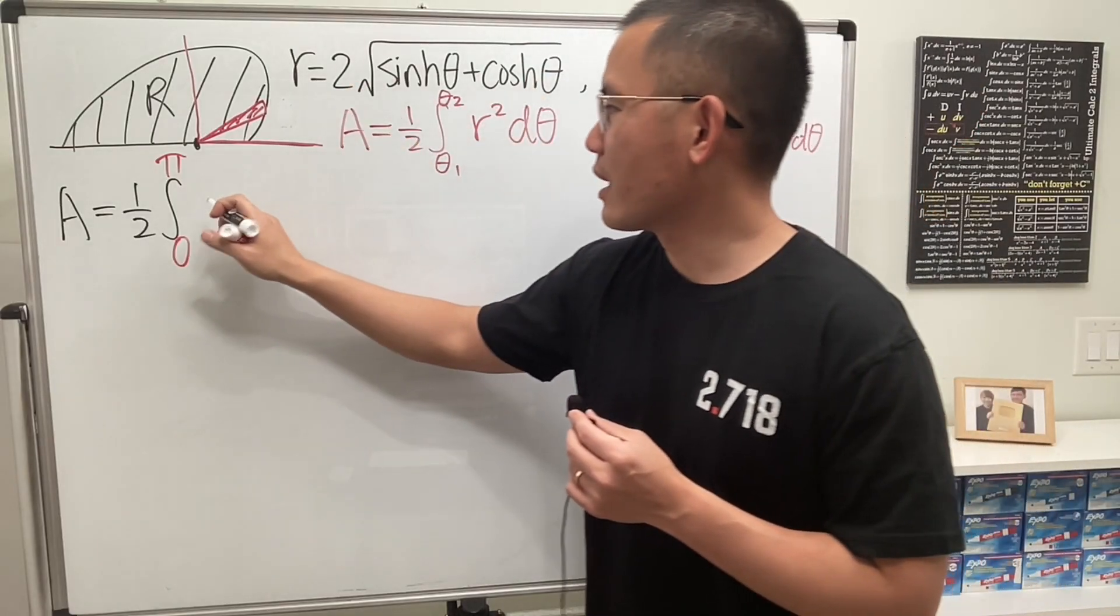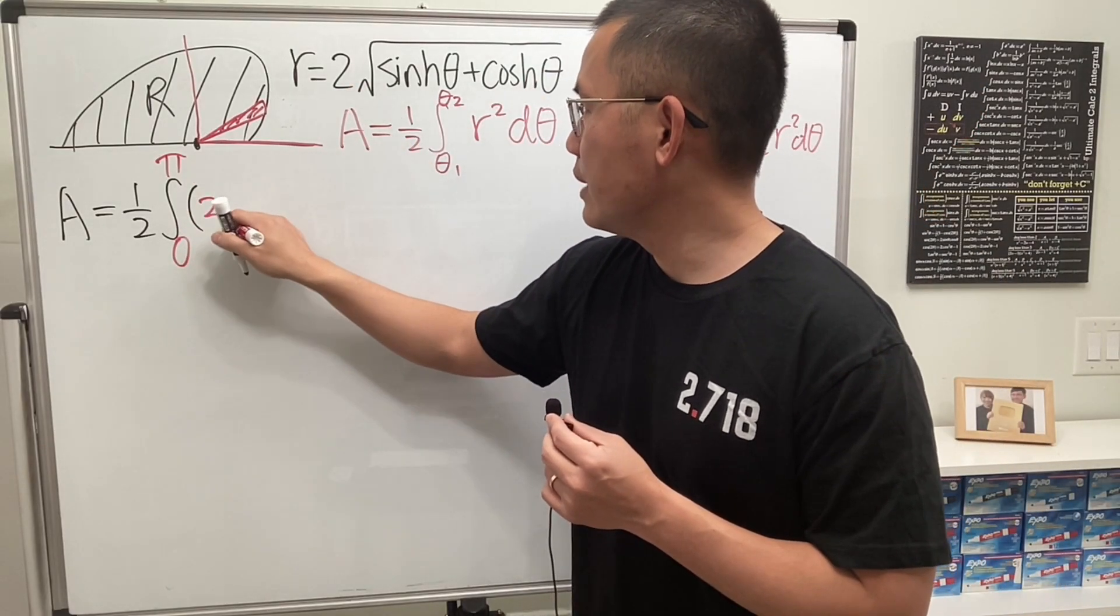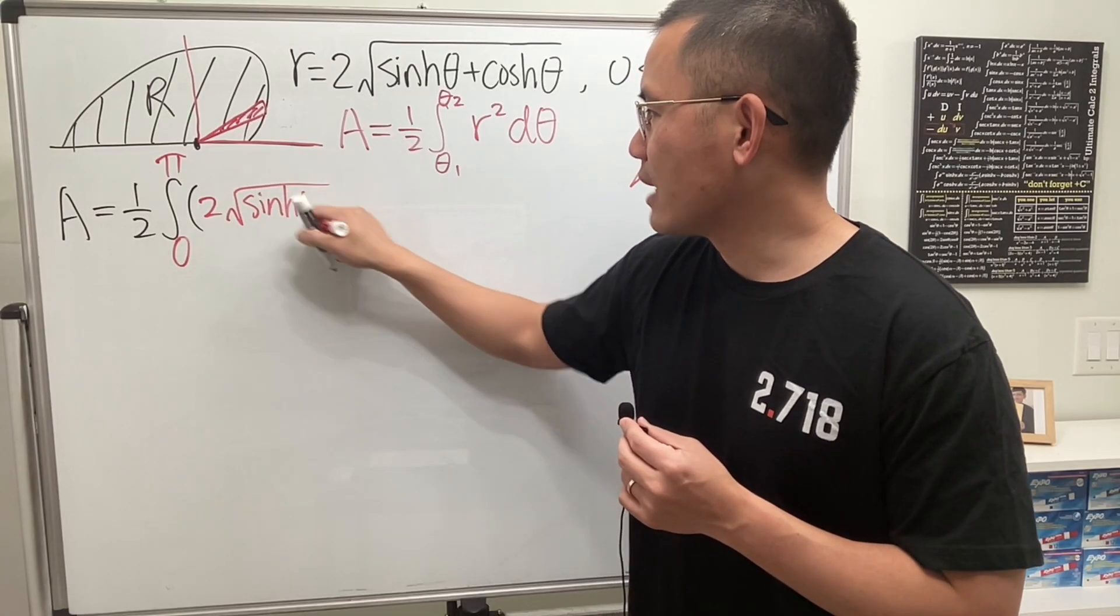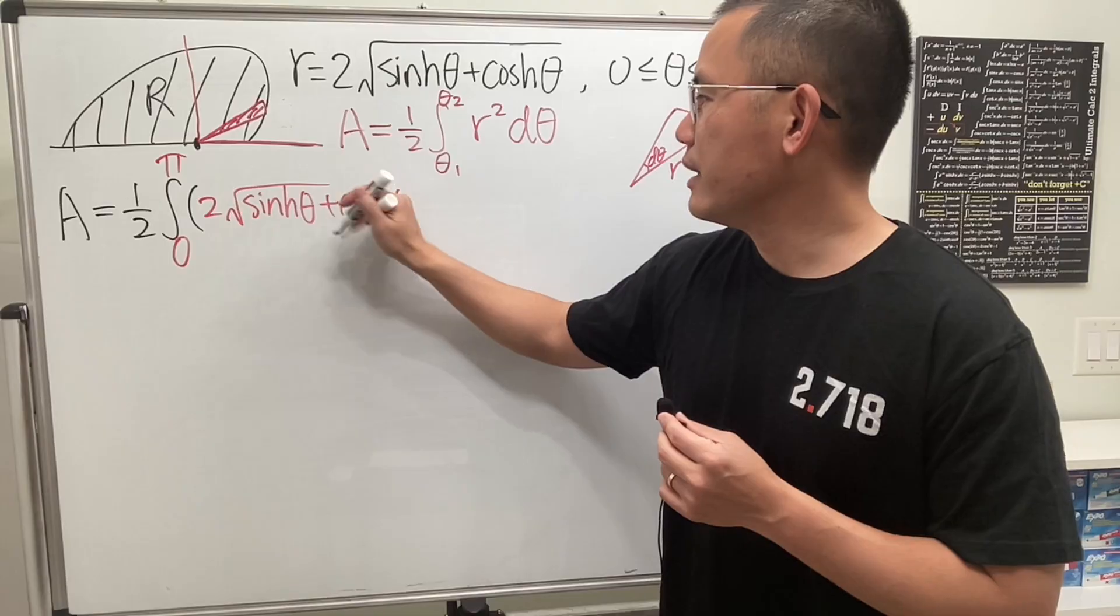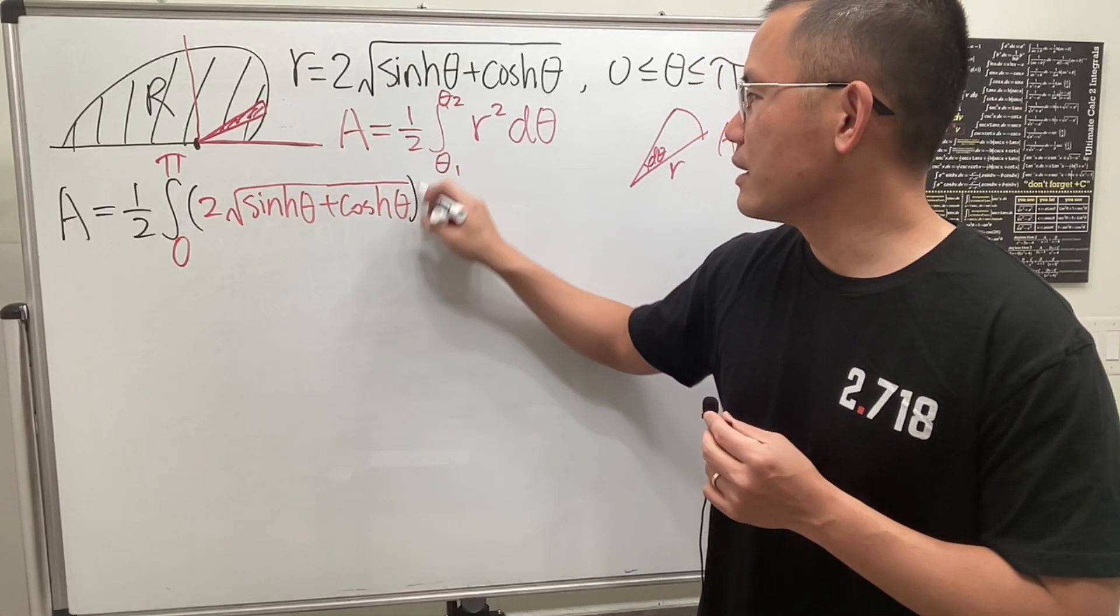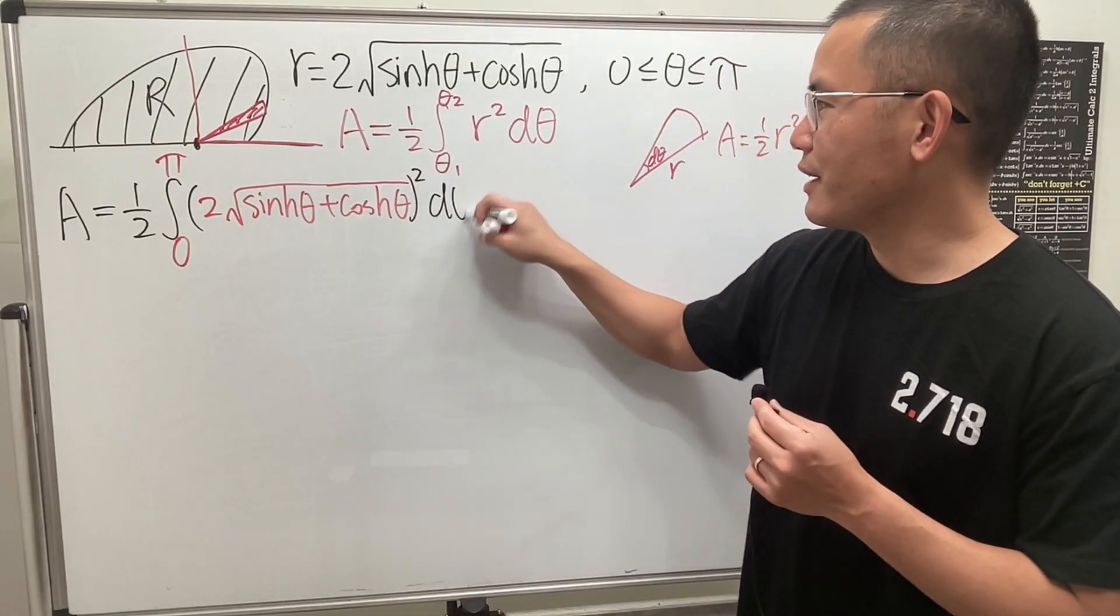And then here, we have to square the r. The r is this thing, so be careful. Including the 2 and then also the square root. Hyperbolic sine plus hyperbolic cosine, and then all that instead of the square root, all that and the square, d theta.